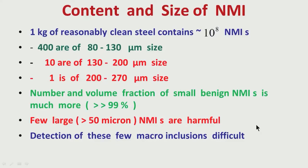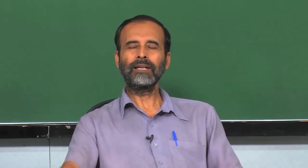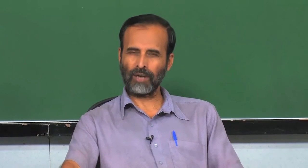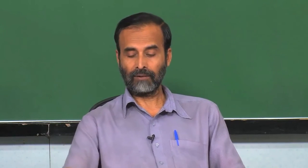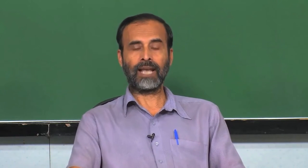Inclusions larger than 50 micron are really harmful and we have to be very careful about those. I must mention that detection of these few — rather very few — macro inclusions in steel is really difficult. Today I will discuss how inclusions are detected in steel and what are the different ways. How can small inclusions or micro inclusions be detected? How can macro inclusions be detected, which are very difficult to find?